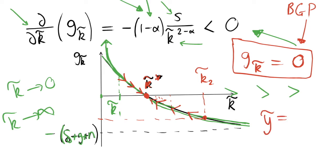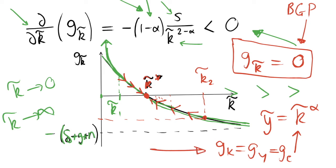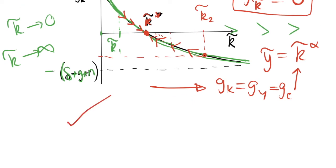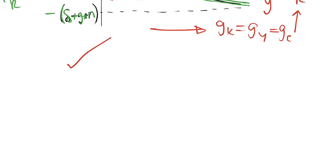Since ỹ = k̃^α and from the previous video g(k) = g(y) = g(c), all of capital, output, and consumption will be growing at a constant rate at k̃*. We have shown that we do converge to the balanced growth path. Wherever we start in the model, we will either reduce or increase k̃ until we converge to the BGP. In the previous video we showed that a balanced growth path exists; now we show we necessarily converge to it in the Solow growth model.